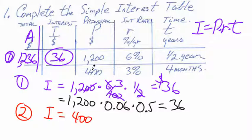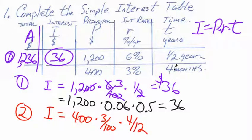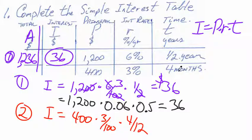Let's do the second one. It's a straight plug-in and hit equals on your calculator. Don't forget: when you put in your time, you don't put in four, because the formula needs time in years. You put in four-twelfths, because four-twelfths of a year is four months.